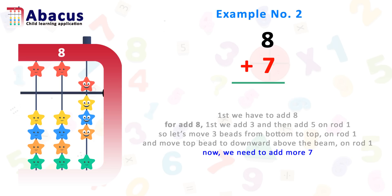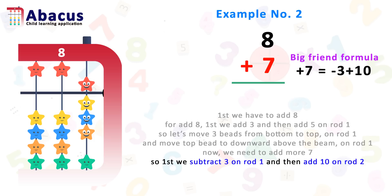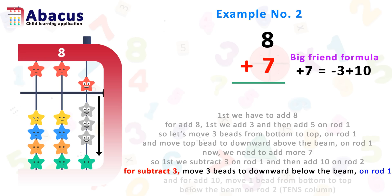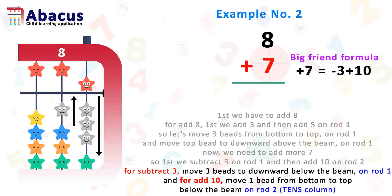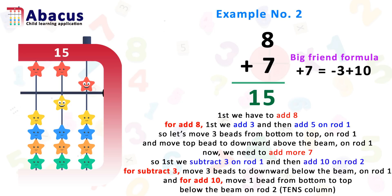Now we have to add more 7 beads. Here in the bottom we have just 1 bead, so we can't add 7 beads. We have to use the big friend formula for adding 7. Big friend formula of plus 7 is minus 3 plus 10. So first we subtract 3 on rod 1 and then add 10 on rod 2. For subtracting 3, move 3 beads downward below the beam on rod 1. For add 10, move 1 bead from bottom to top below the beam on rod 2. The answer is 15.